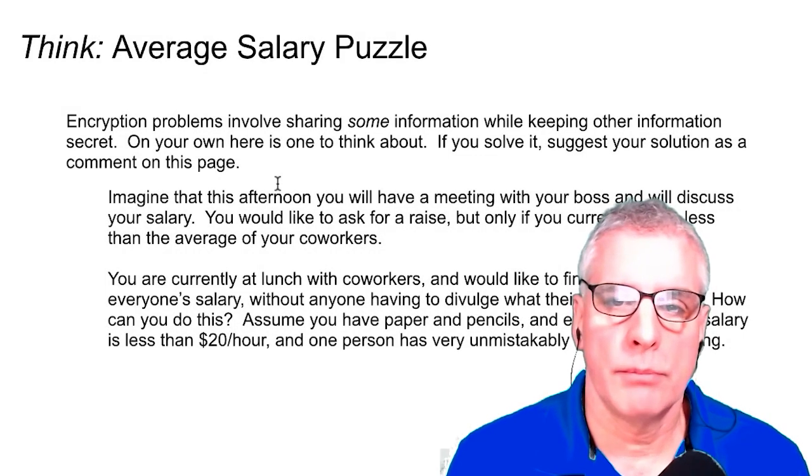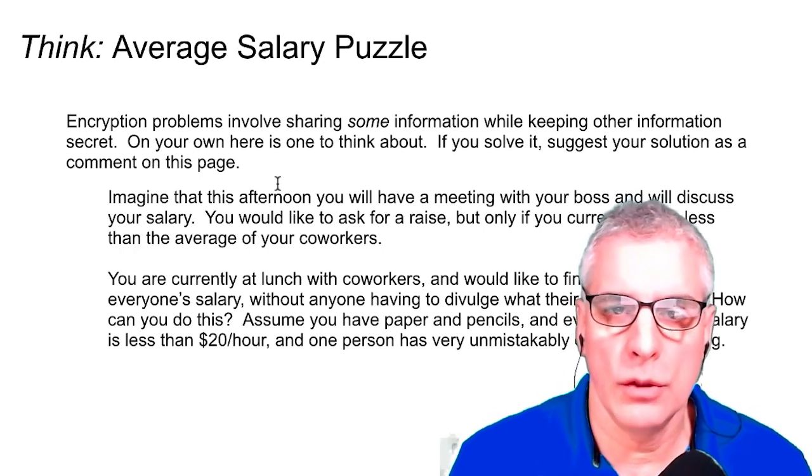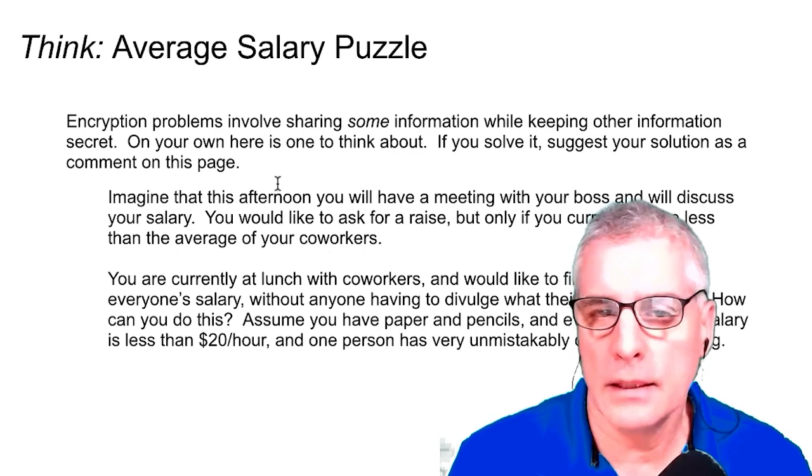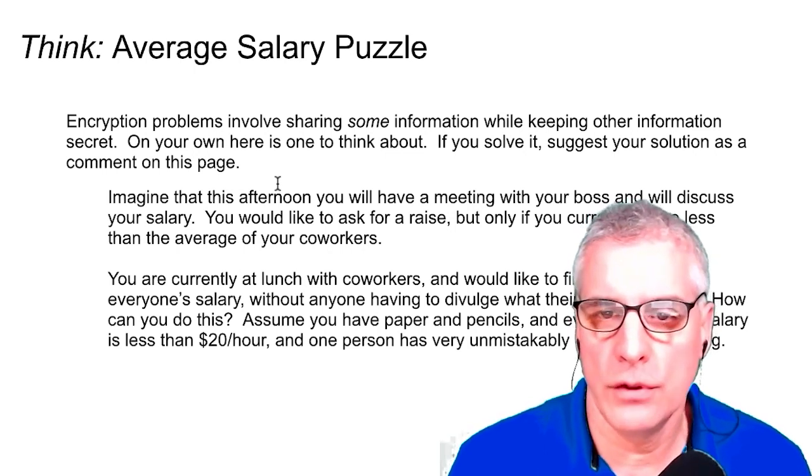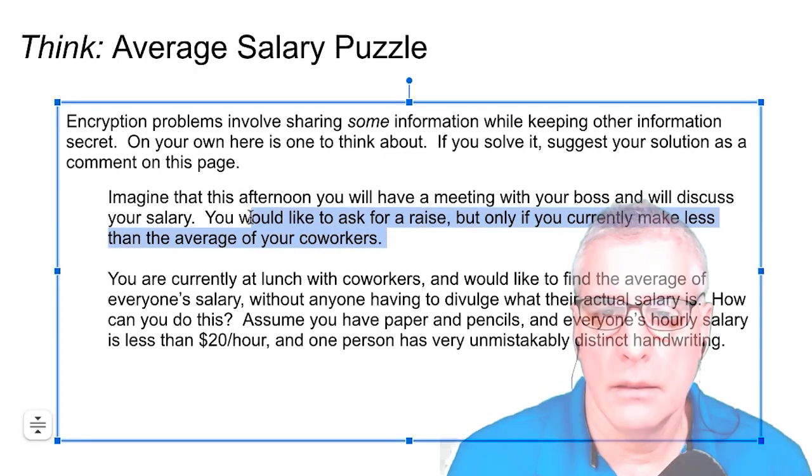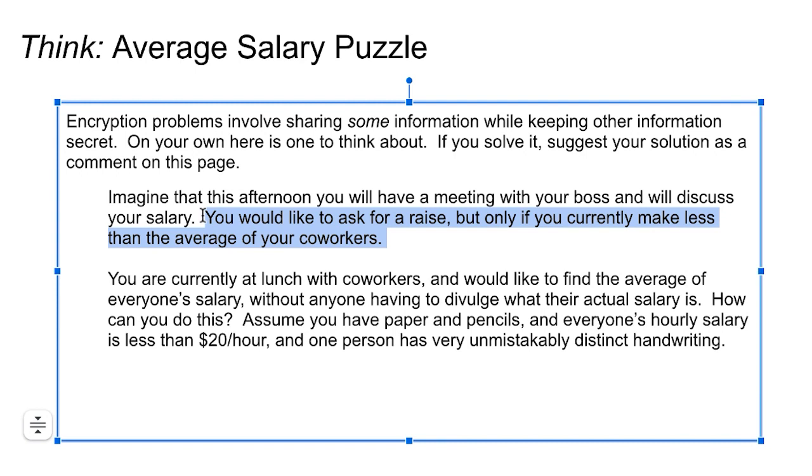Leave you with a challenge puzzle. So encryption involves some information that you share publicly, the public part, and some that you keep private to yourself. So think about this problem. So imagine that you work, you have a job, and you're paid by the hour, and you're working, you have a meeting with your boss to discuss your salary. You'd like to ask for a raise, but only if you currently make less than the average of your coworkers.